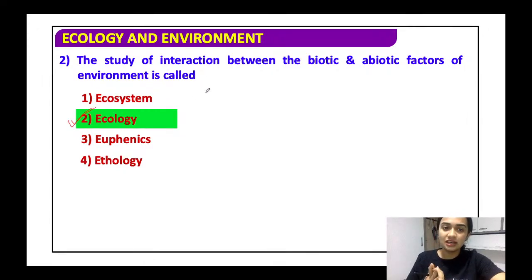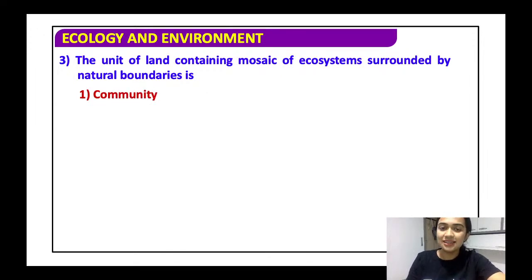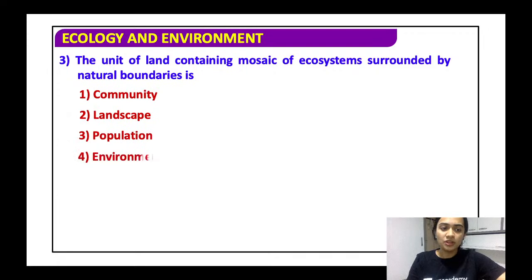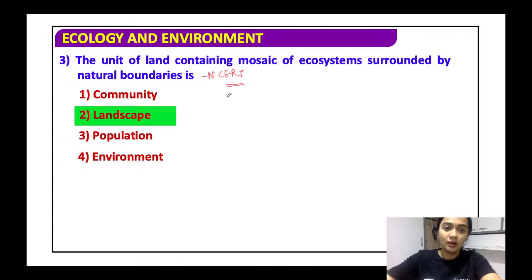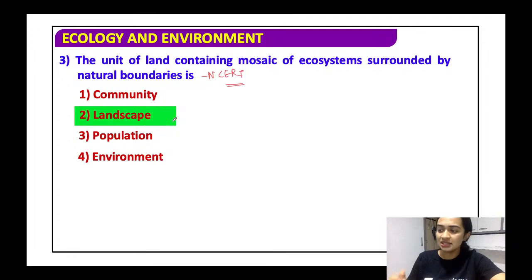The study of interaction between biotic and abiotic factors of the environment is called ecology. The unit of land containing a mosaic of ecosystems surrounded by natural boundaries is a landscape — this is an NCERT definition and you should know it word for word. All definitions in this chapter are very important.